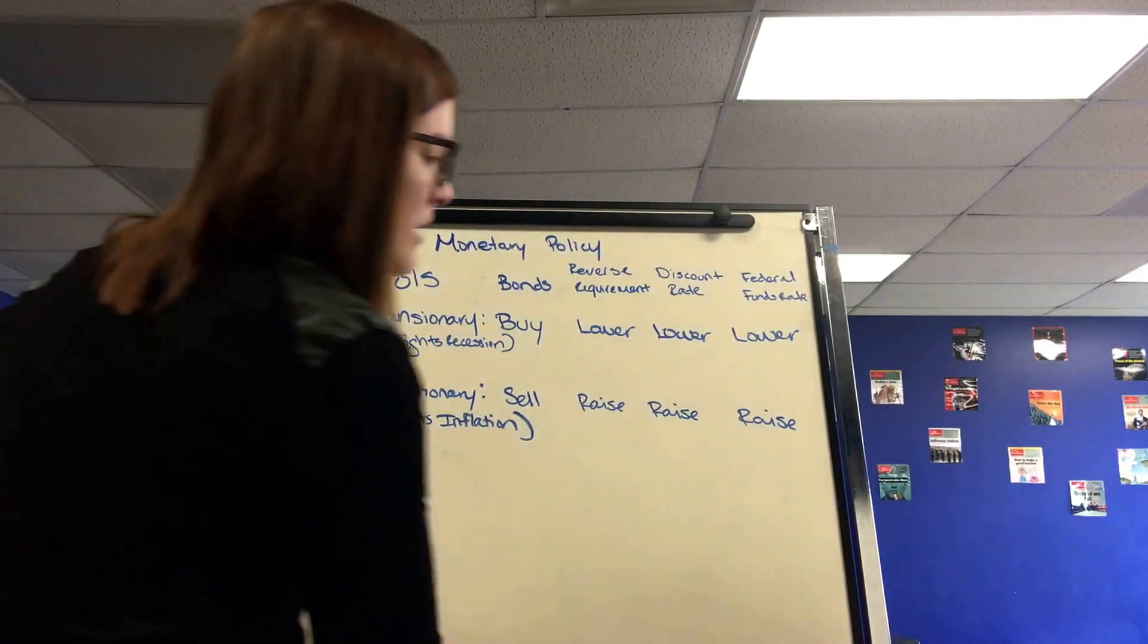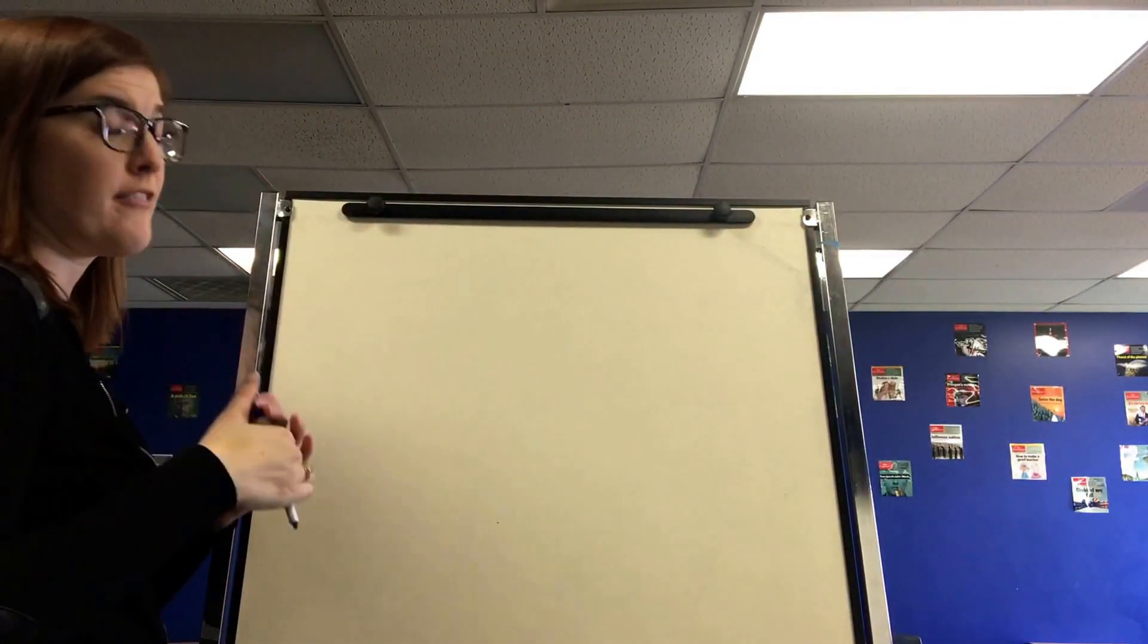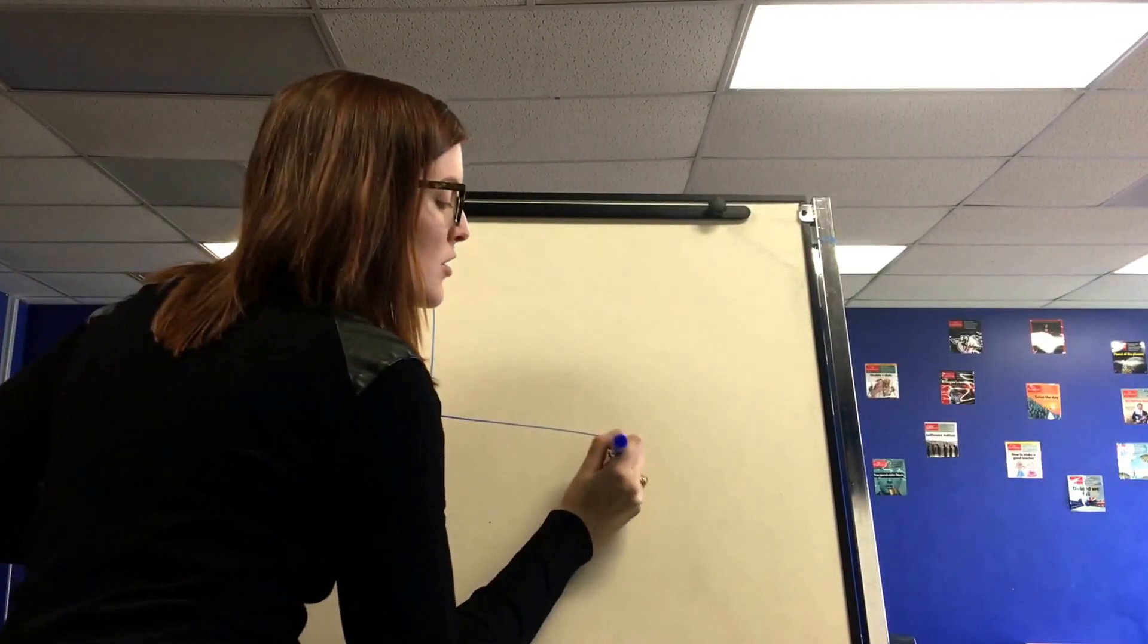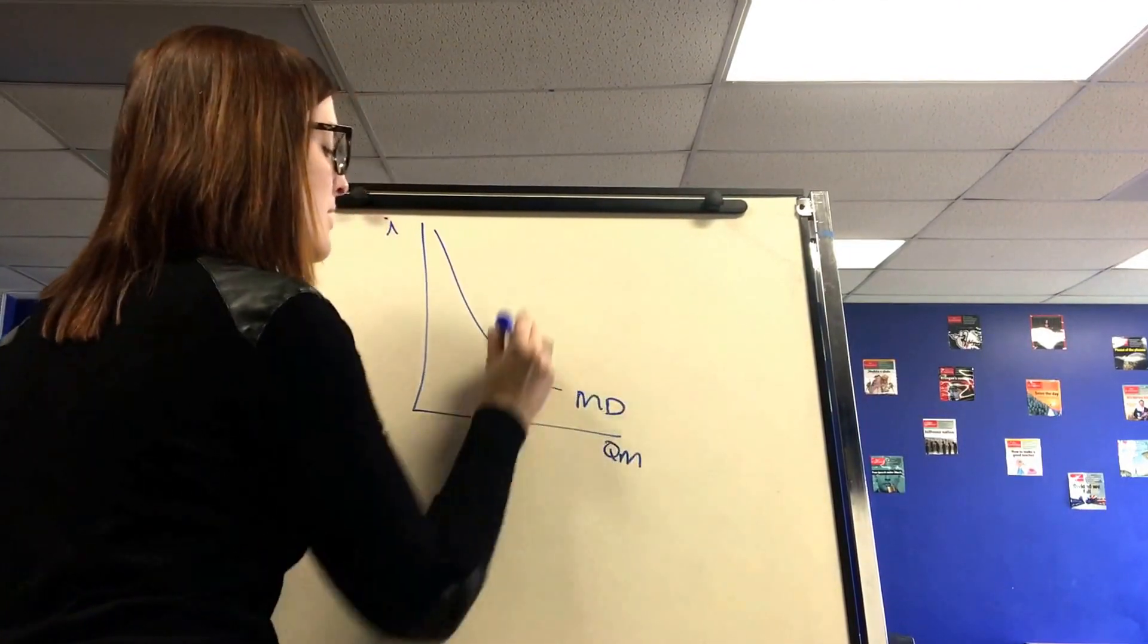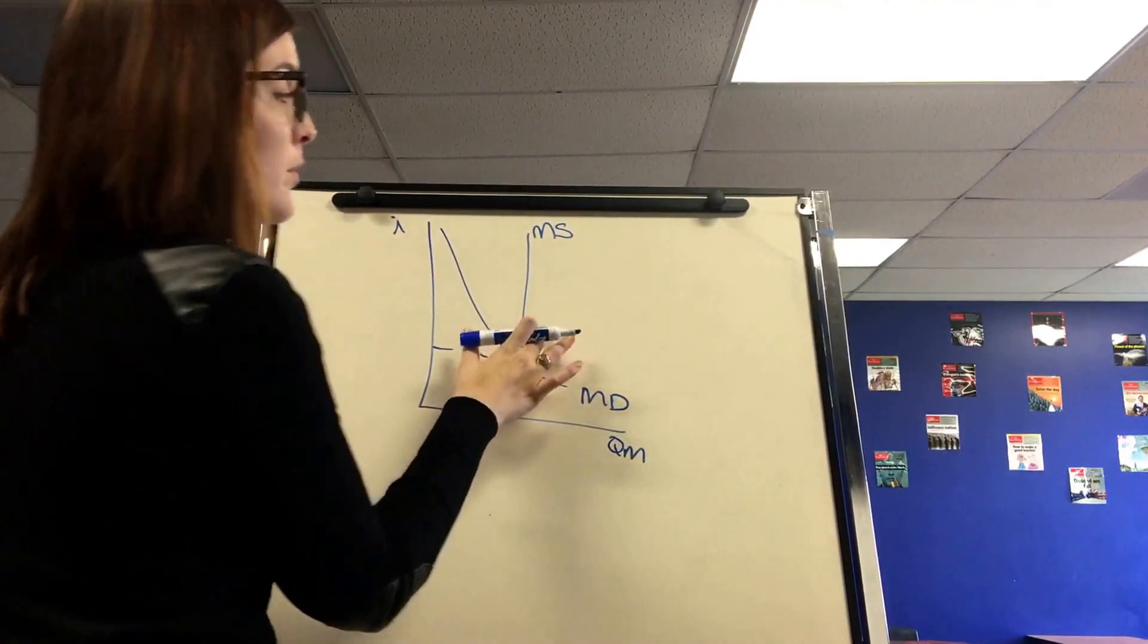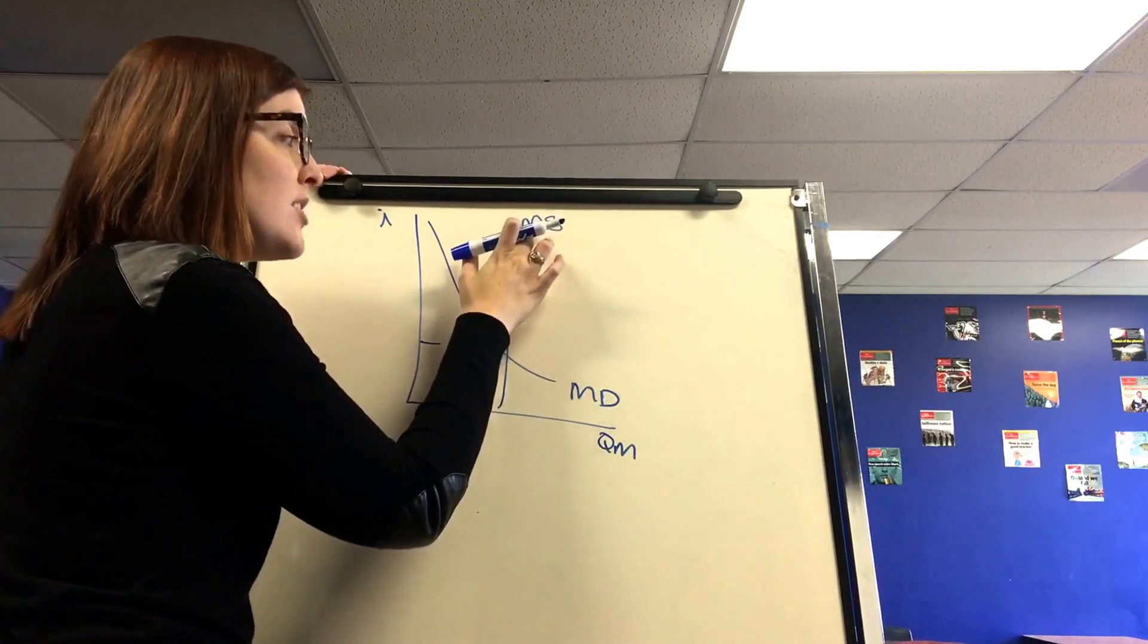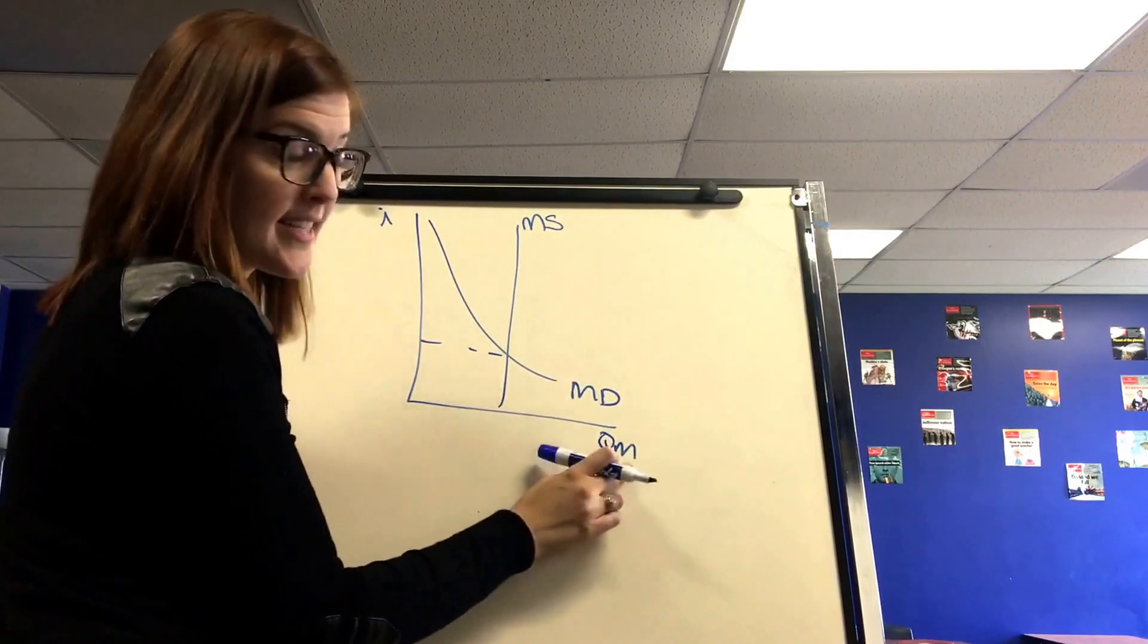Now let's look at the money market graph and how these tools will end up affecting GDP. So the money market graph is on your graph review. And on this graph it is important to remember how to label it. So I've been noticing that a lot of you guys have been kind of forgetting how to label the different components. So we have a vertical money supply line. This is vertical because the Federal Reserve has a monopoly over it. They are the only people who can change it and then therefore change the quantity of money. That's the x-axis label.